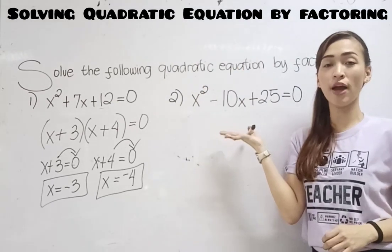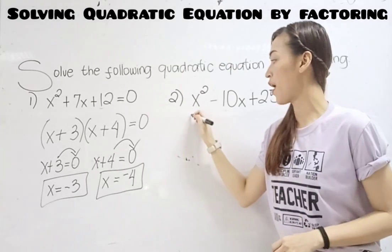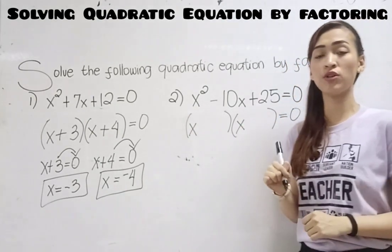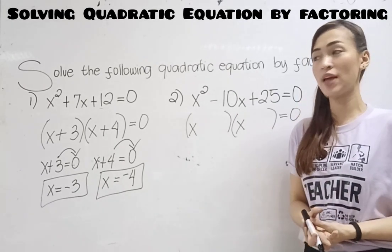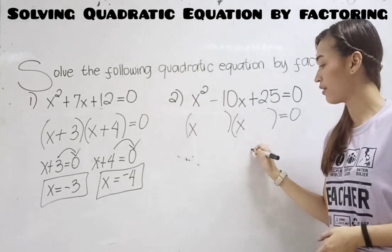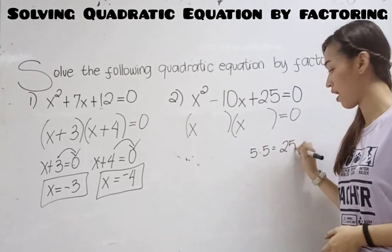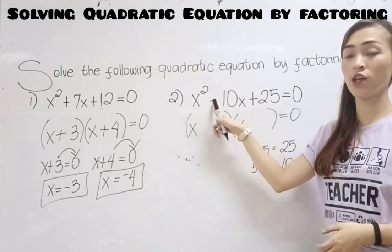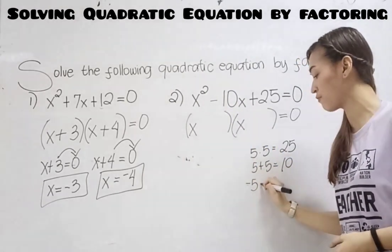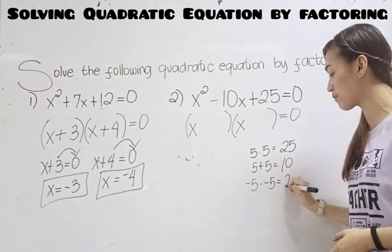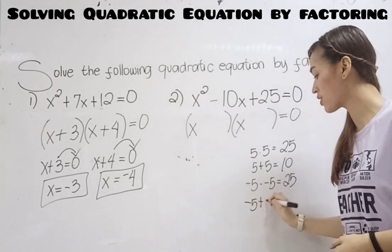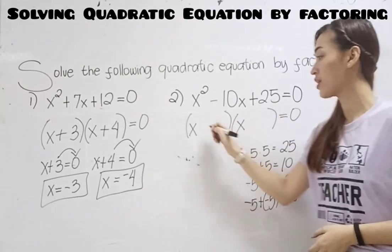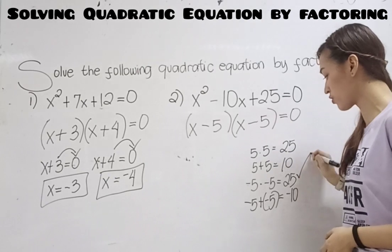We have number 2: x squared minus 10x plus 25 equals 0. Factor x squared — the factors are x times x. Think of two numbers: when multiplied the answer is 25, and when added the answer is negative 10. We have negative 5 times negative 5, which is positive 25. And negative 5 plus negative 5 is negative 10. So the factors of 25 are negative 5 and negative 5. This is correct.